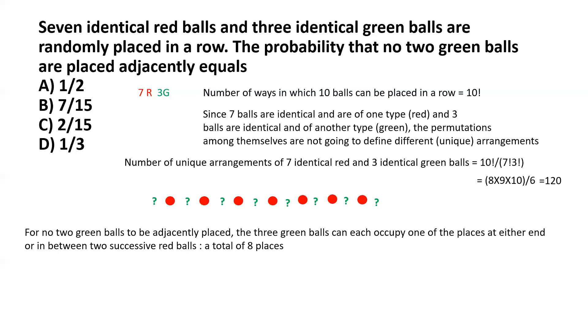Basically, for no two green balls to be adjacently placed, the three green balls can each occupy one of the places at either end or in between two successive red balls. If you count the number of spaces, that's a total of eight possible places.